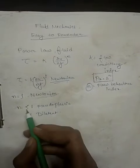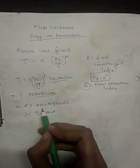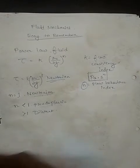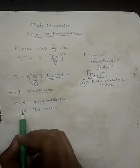When n is less than 1, the kind of fluid you are dealing with is pseudoplastic and when n is greater than 1, the kind of fluid you are dealing with is dilatant.